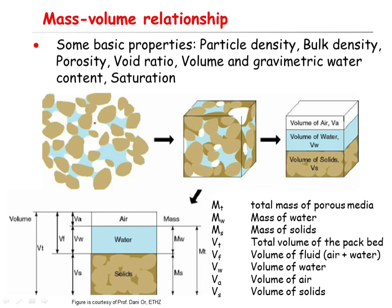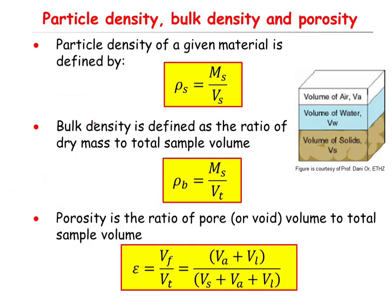Suppose that you have the mass and volume of each phase separately. The particle density, or solid phase density, is defined as the mass of the solid phase Ms divided by the volume of the solid phase Vs — that is, Ms divided by Vs equals rho s, the particle density.